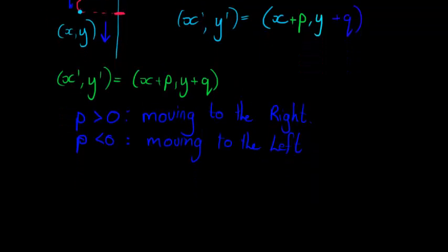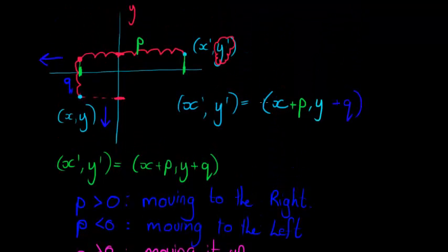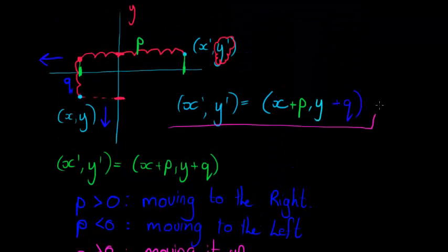How about q? If q is greater than 0, then that's now messing with the y values. We're moving this thing up or down. If it's positive we're obviously moving it up, and if q is negative we're moving it down.